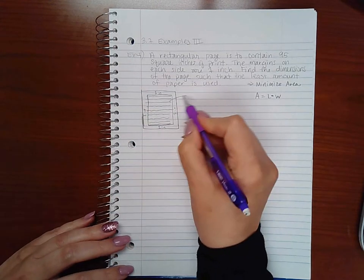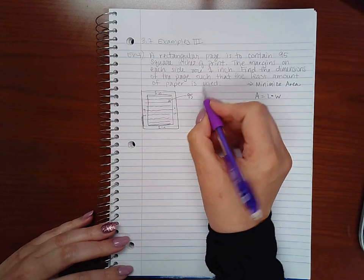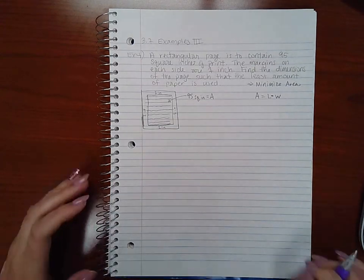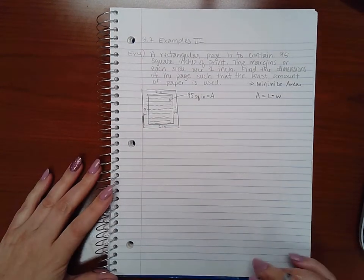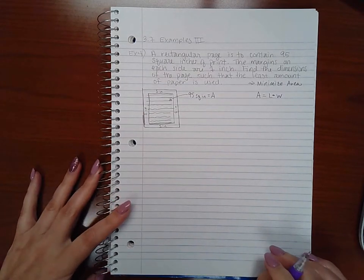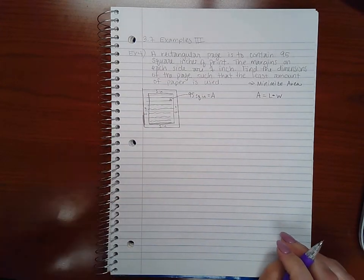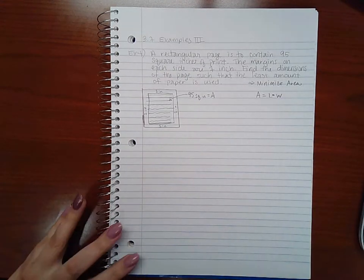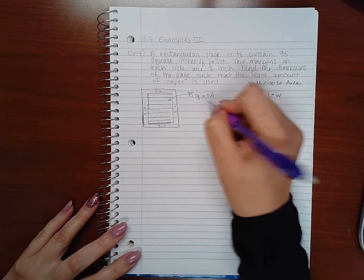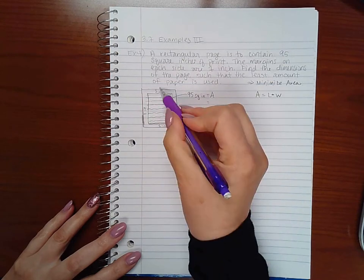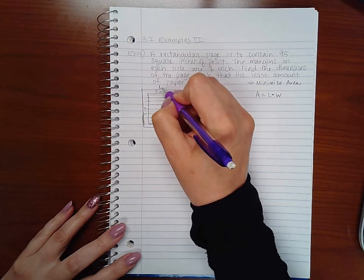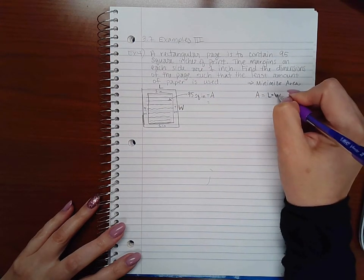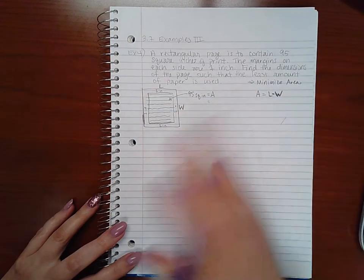And there's my print in there, and this print is actually 95 square inches, which is an area, right? So this one has a lot of secondary equations. One thing that we know is that the area of the print - we'll call this big L and big W.